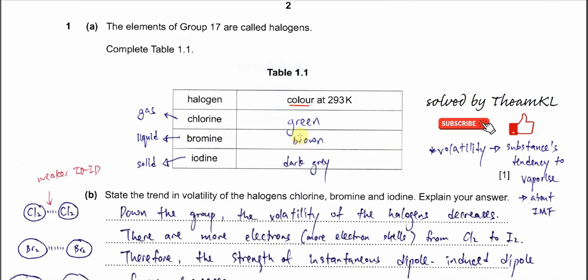This question is about the colors of the halogens. There are three halogens in the table: chlorine, bromine, and iodine. These group 17 halogens are quite special because this is the only group whose elements can exist in three phases — gas, liquid, and solid. Chlorine is in gas form and its color is green. Bromine is a liquid and is brown. Iodine is a solid and is black, or you can say dark grey. These are the things you must know — the colors of the halogens.